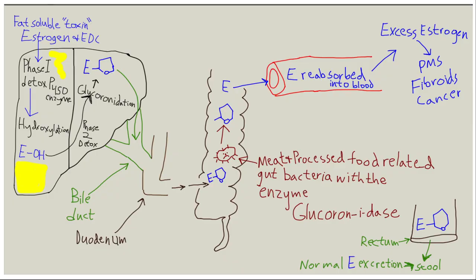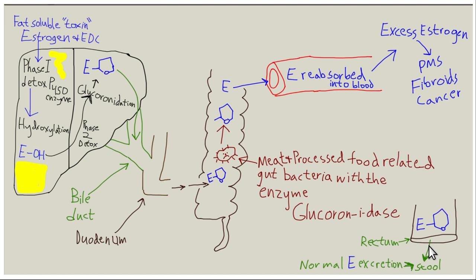One of the ways the body excretes estrogen is that it goes to the liver and undergoes two phases of detoxification. In phase one, estrogen is hydroxylated — adding an OH group makes it more polar. In phase two, glucuronic acid is added — think of glucuronic acid as glucose plus a carboxylic acid. When estrogen levels in the blood are high, the liver, the metabolic workhorse of the human body, will hydroxylate and glucuronidate the estrogen, excrete it into the bile, and it passes into the colon, where normally we defecate it out of the body.